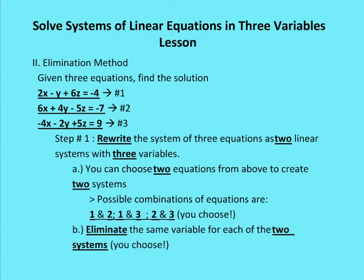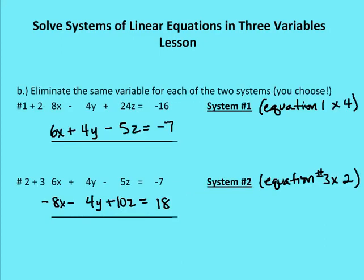We need to choose two of those sets of equations and eliminate one variable from each. I've already decided, based on looking at the equations, that I want to eliminate the y variable. I'm going to work with the two pairs: equations one and two, and equations two and three. The strategy is to reduce the system from three variables down to two, following the same process we used with elimination for two-variable systems.